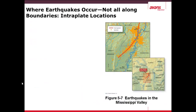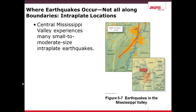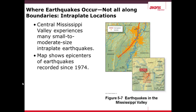Not all earthquakes happen along tectonic boundaries. They can also be located in intraplate locations. An example is shown in the states of Missouri, Kentucky, Tennessee, and Arkansas, along the Mississippi Valley. The Mississippi Valley experiences many small to moderate-size intraplate earthquakes. Intraplate earthquakes are not known for their high magnitude or intensity, though the map shows many earthquakes that have occurred since 1974 in the middle of the plate.